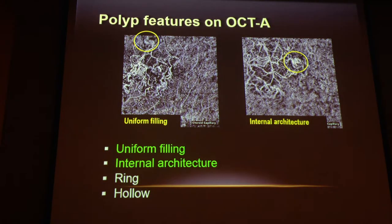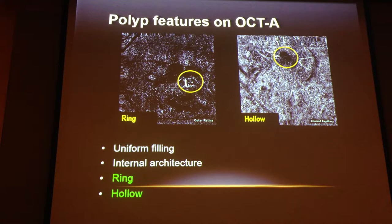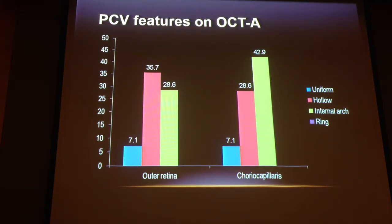We looked at different patterns of the polyp on OCTA. There's a uniform filling where the intensity is quite uniform throughout. Some polyps appear with internal architecture where you can see gaps, reflecting the structure of the polyp. In others, we see a bright ring around the region where the polyp is. And unfortunately, in many cases we see just a hollow area. The question is: would we confidently call this a polyp using only an OCT angiogram? That's the current challenge.